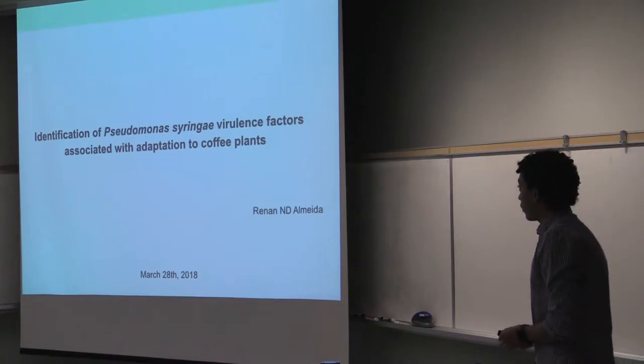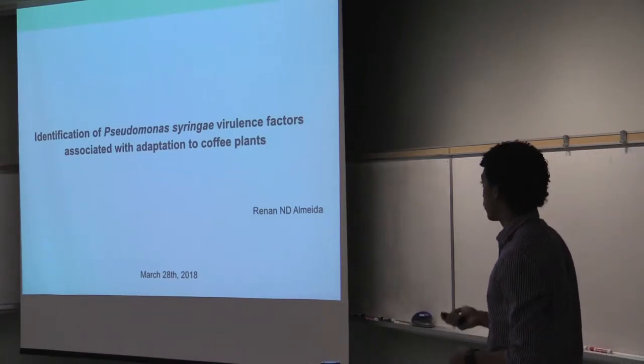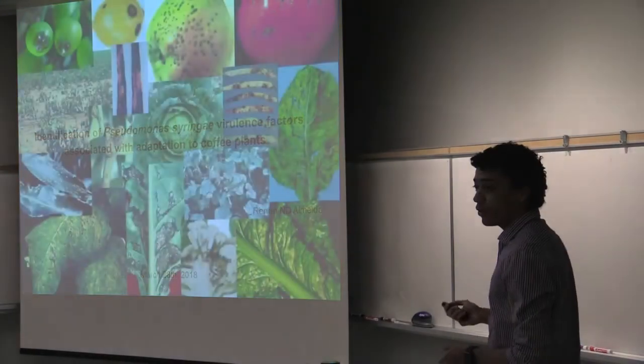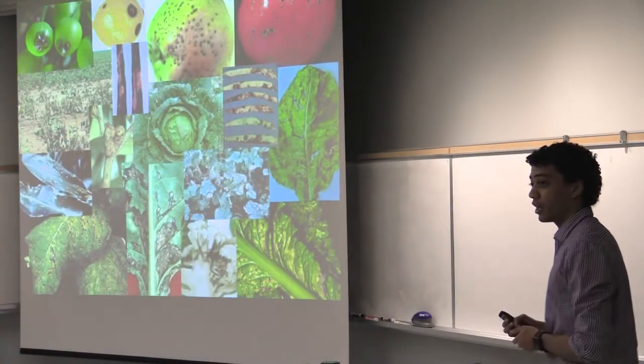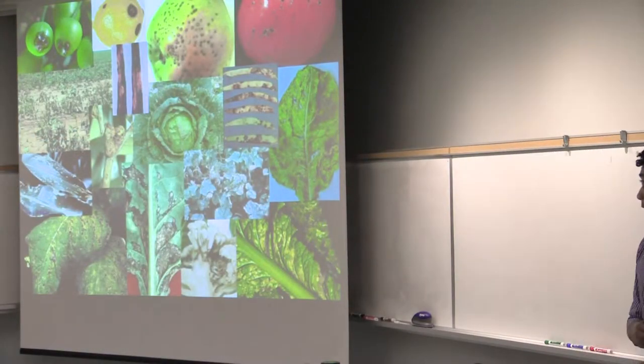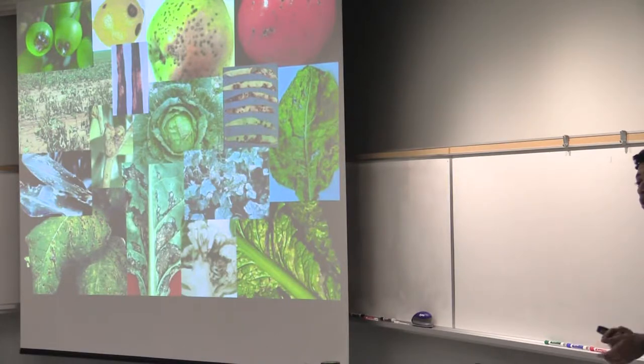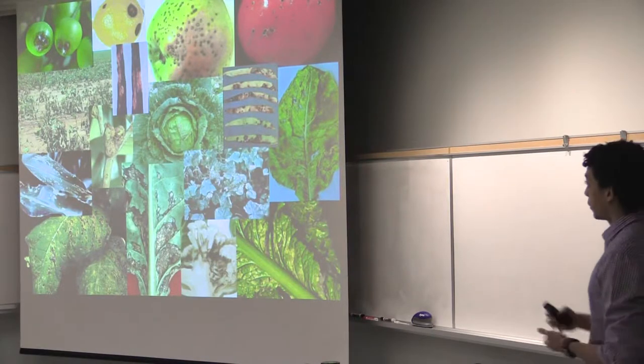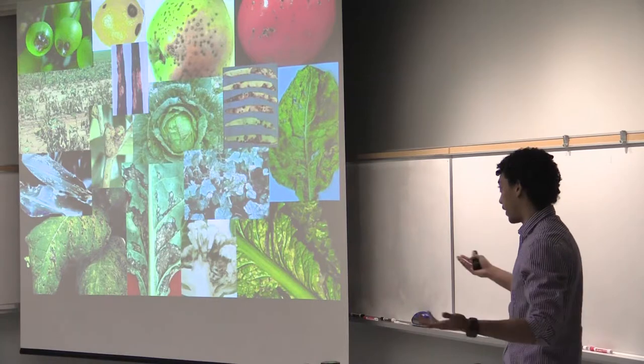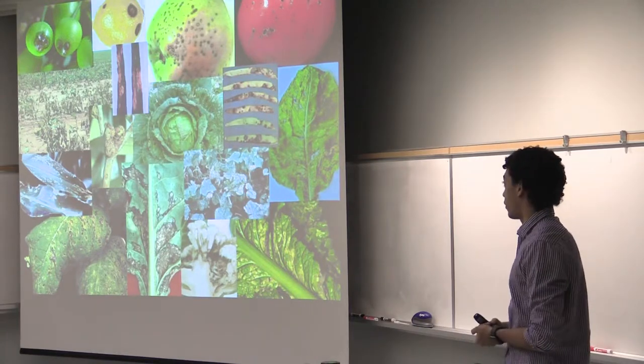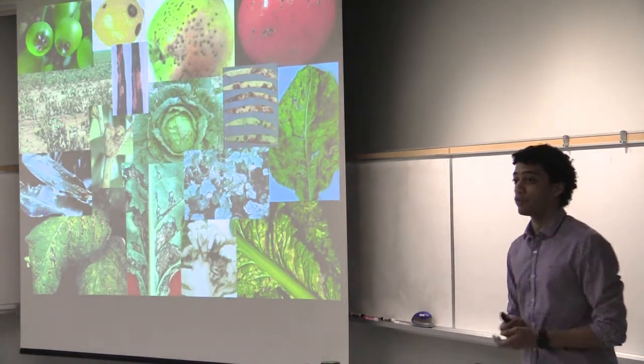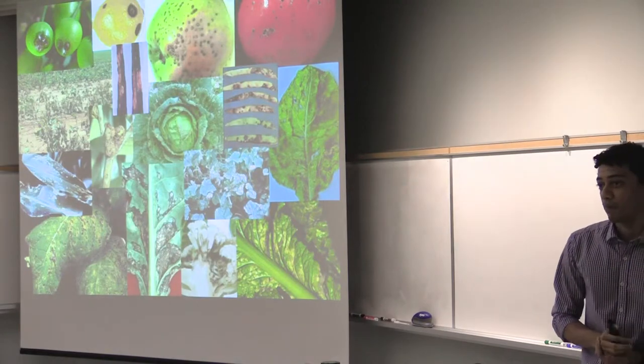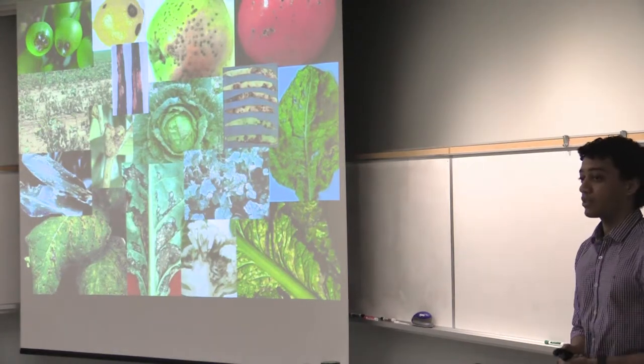So I'm just going to start by giving you a brief background of Pseudomonas syringae, which is a bacterial pathogen that causes disease in more than 100 crop and non-crop species. And what David usually writes in the grants is that by understanding how the system works, we might be able to prevent crop loss in the future. But to be honest, I'm just interested about trying to figure out how stuff works.